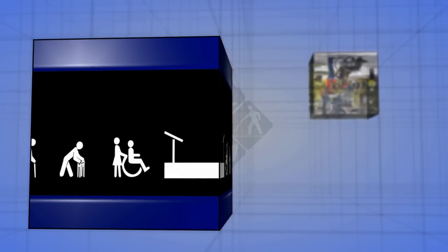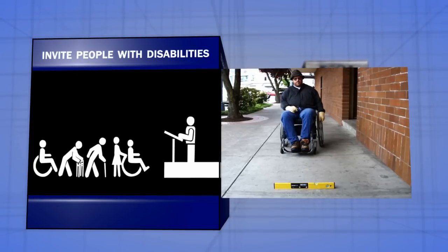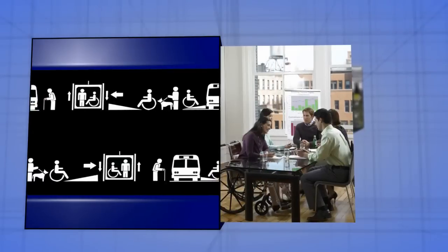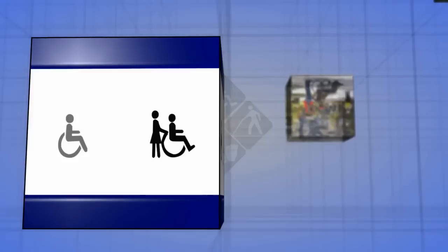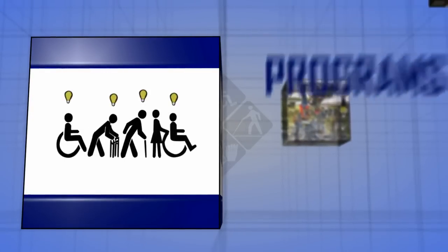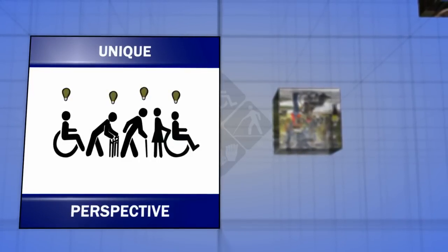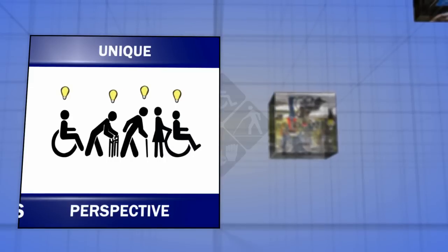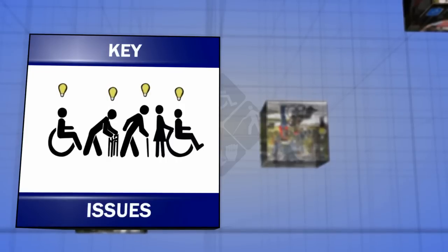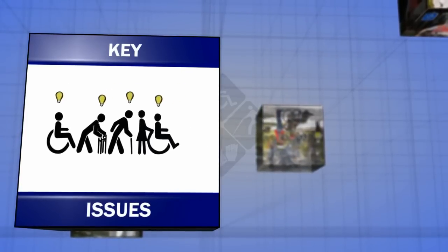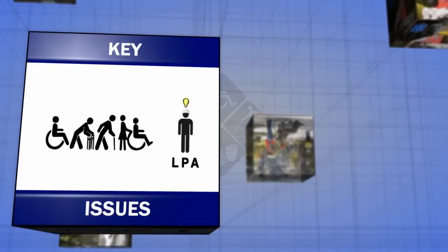To ensure that you are appropriately addressing the needs of individuals with disabilities, invite people with disabilities or their advocates to participate in the self-evaluation process. This is not only advantageous, but is also a requirement of the ADA and Section 504 laws. Individuals with disabilities often have unique ideas on how your programs, services and activities can better serve them, and can offer unique perspectives on what hinders their involvement and participation. Soliciting their input will ensure that improvements adequately address their concerns and recommendations.